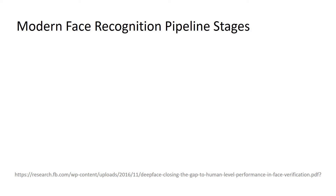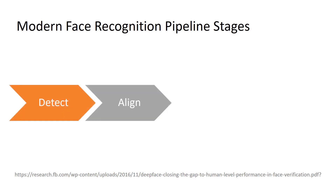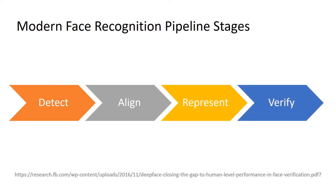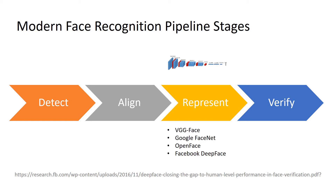Modern face recognition pipelines consist of four common stages: detection, alignment, representation, and verification. In the representation step, we apply regular convolutional neural networks. The most common face recognition models are VGG-Face, Google FaceNet, OpenFace, and Facebook DeepFace. We represent face images as vector embeddings with these face recognition models.